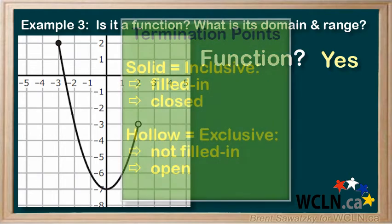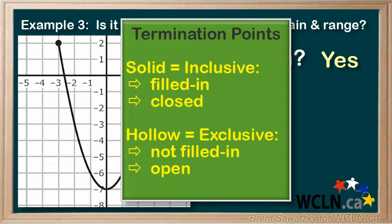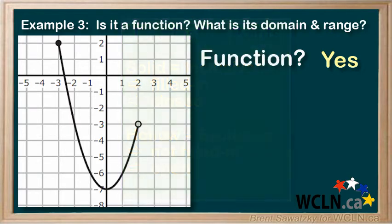Well, a solid termination point indicates that the point itself is included as part of the relationship. It's therefore called an inclusive termination point. It includes the point itself. In this relationship, the point is included as part of the relationship.